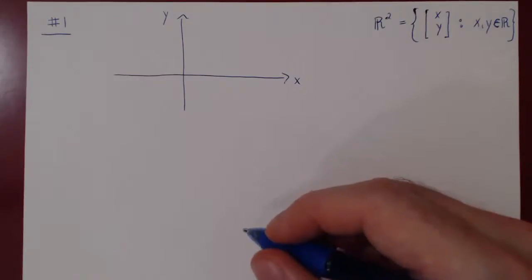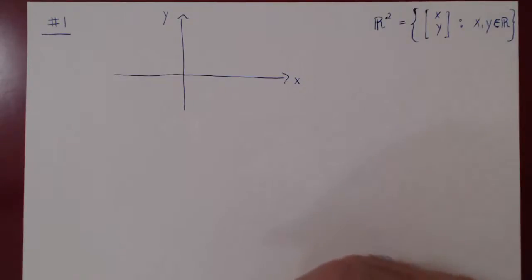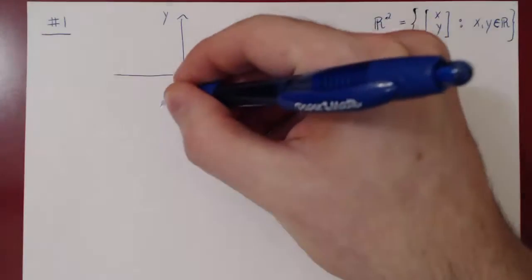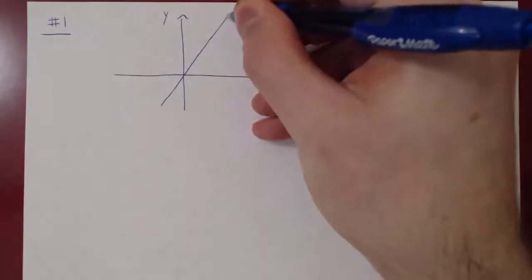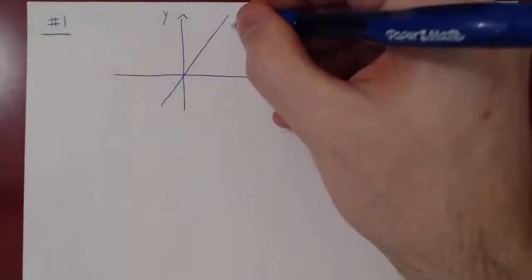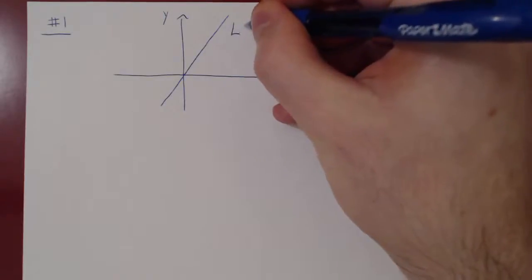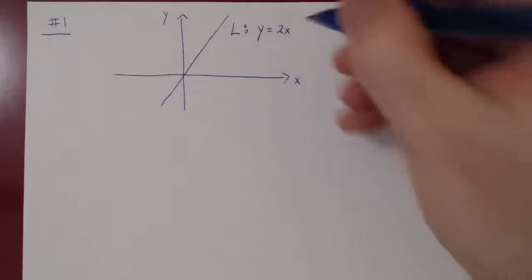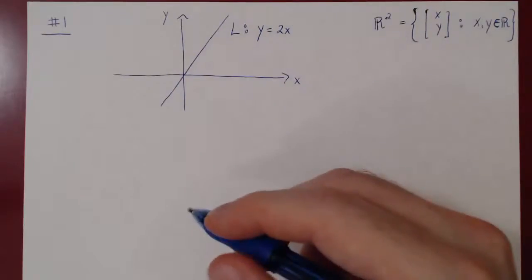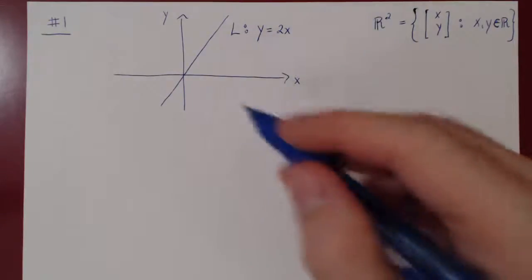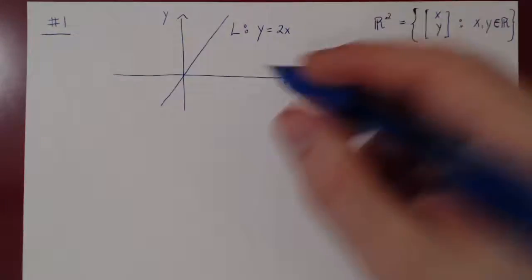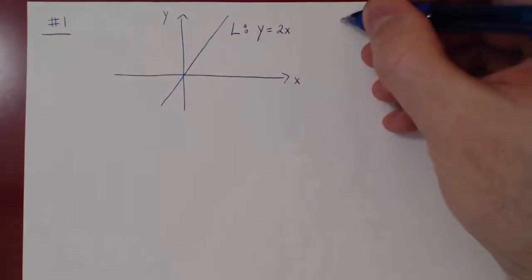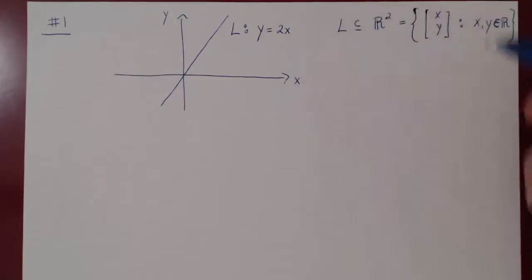Now consider a subset of R², and I will take quite simply the line y equals 2x. My question is very simple. Clearly, L is a subset of R², since every point on this line is a point in the xy-plane. Therefore, L is a subset of R².